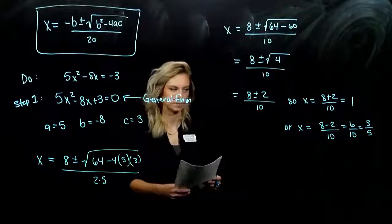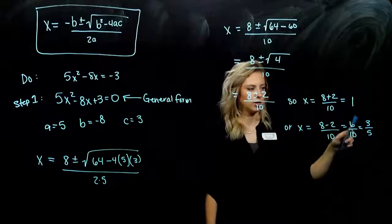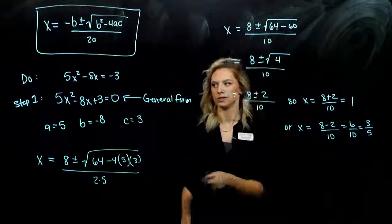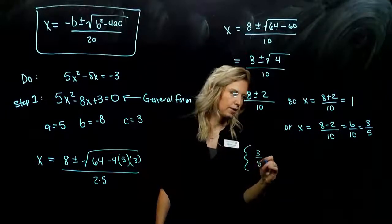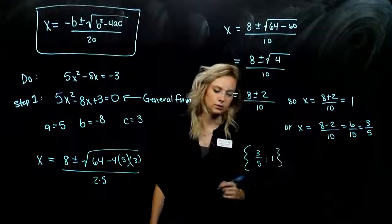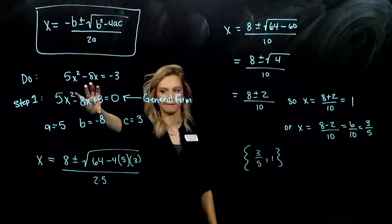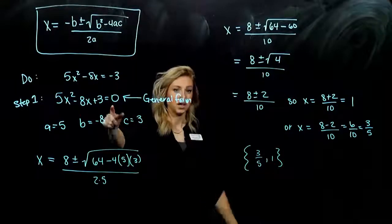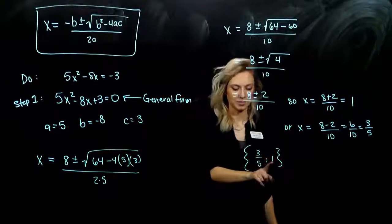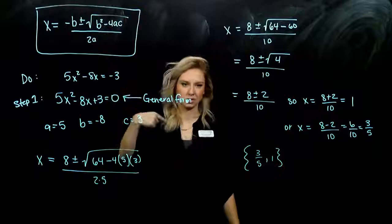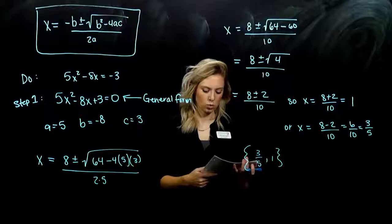So x is going to be equal to eight plus two over 10, which is going to give us what? One. Or x is going to be equal to eight minus two over 10, which comes out to be 6 tenths. And we can simplify that down, taking out a factor of two from each. Three fifths. So we always have those two options. Now could you imagine trying to factor and get that combination of one and the fraction three fifths? To multiply pain in the butt. So the solution set, three fifths and one. Those are the values that we can plug in to our general form equation over here and make it actually be equal to zero. And if you're not convinced, you can always plug those in and check. If I let x be equal to one, does it come out to be true? If I let x be equal to three fifths, does it come out to be true? I'll go ahead and take the one on the next page.